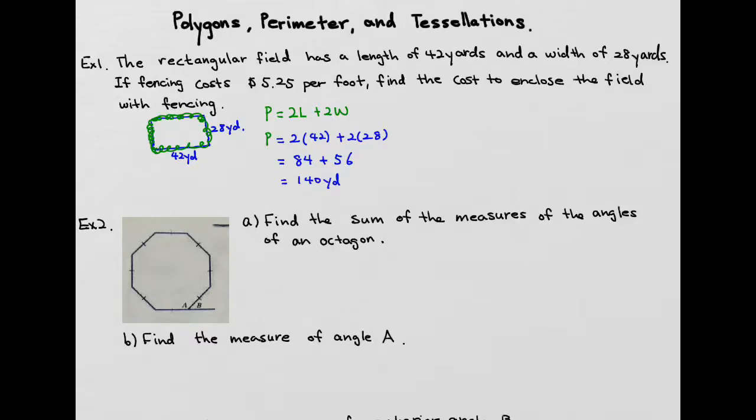So that's the length. And it says fencing costs $5.25 per foot. So this is how much you're going to pay per foot. But what we have is yards. So the next thing I need to do is change the units.